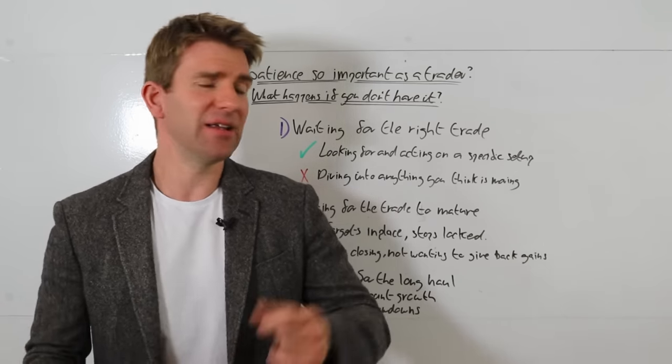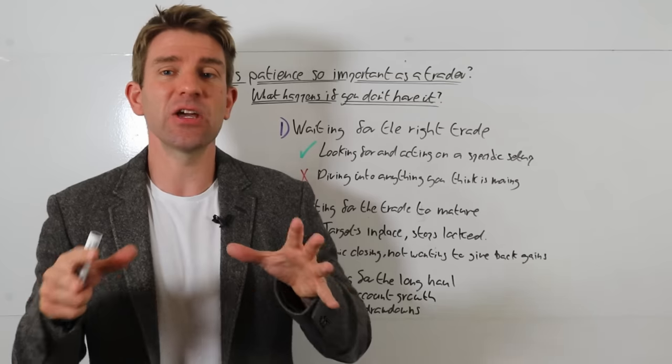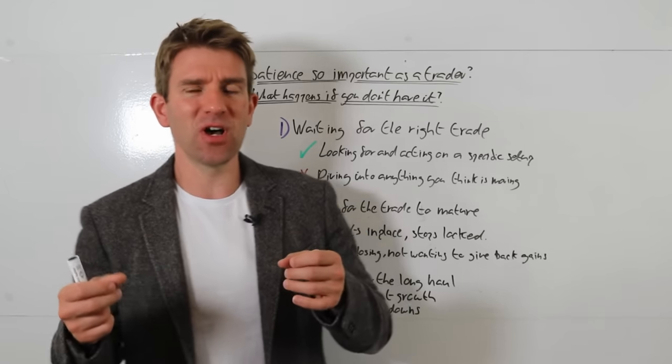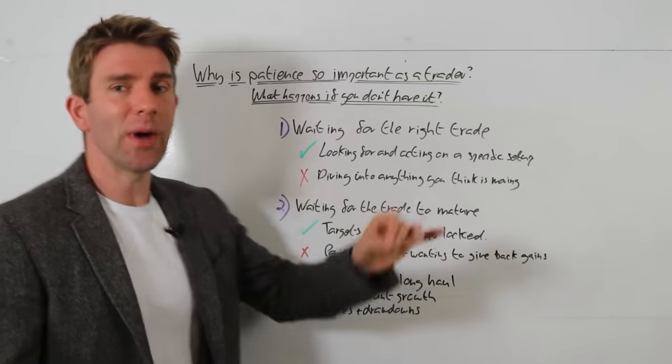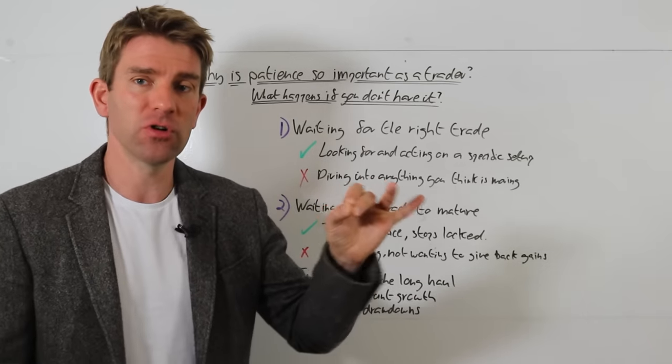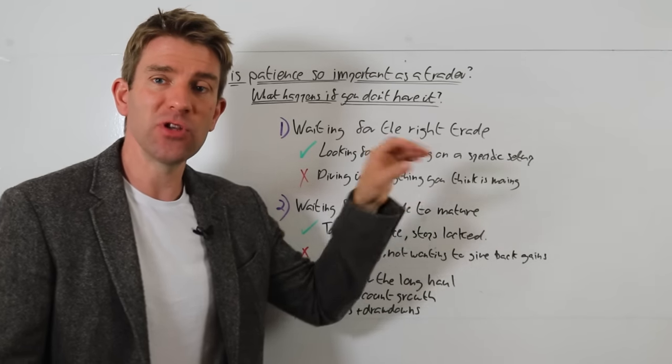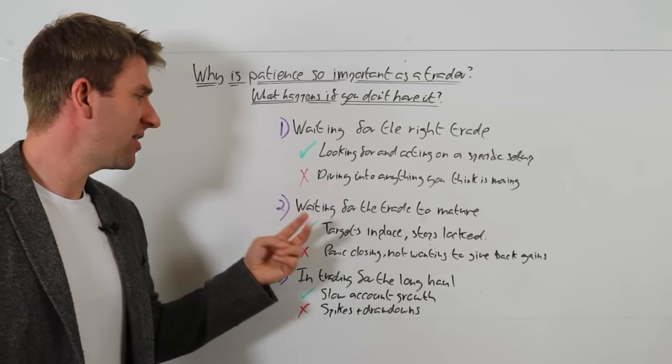You get the idea guys. If you're all over the place you're never going to be able to get good at anything and you're never going to know what's working. So you get the example, it's a bit broad but it's the same kind of thing with trading. If we're patient, waiting for the right trade and we're focused on the right thing, then we act on our specific setup and we just do that and we can get better. If we're all over the place we're going to struggle. The second thing is waiting for the trade to mature.